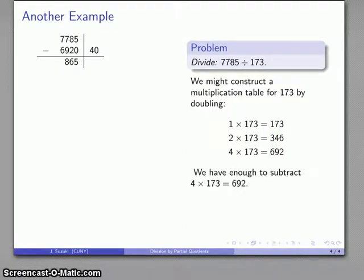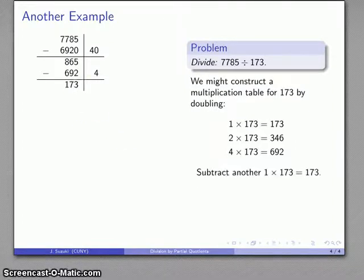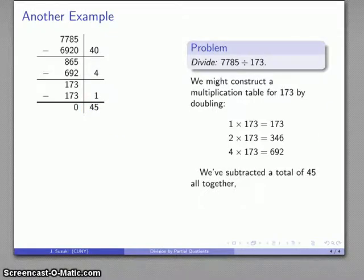So I'll ignore the 0 for a second. And just using the work I've already done, I can see that I can subtract another 4 173s. So I'll subtract 4 173s. And there's 173 left over, so I'll subtract 1 more 173. And how much have I subtracted altogether? 40, 4, and 1. 45 173s altogether. And so that gives me my quotient, 7785 divided by 173. Quotient is 45.